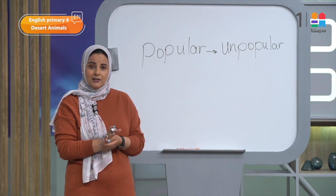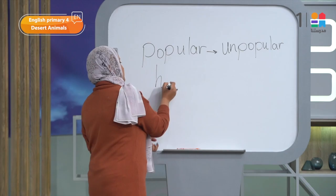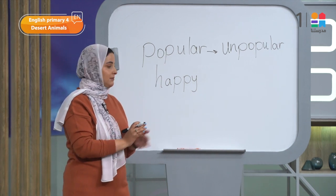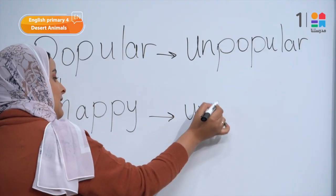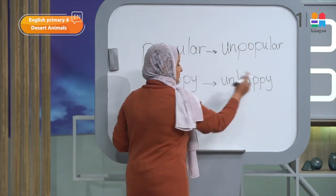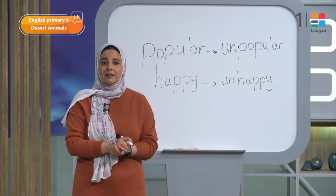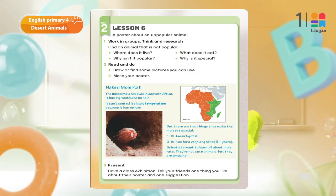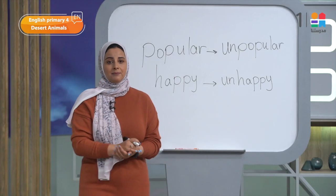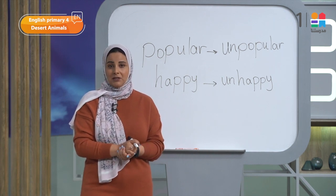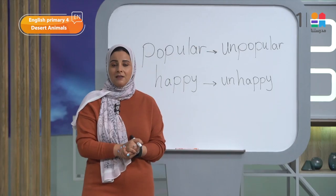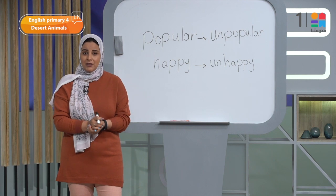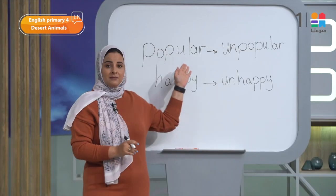Can you think of another word with 'un-'? For example, if I'm saying happy — حد سعيد مبسوط — what is the antonym or the opposite of happy? Unhappy. Can you name some popular animals? Why are they popular? Monkeys, for example, because they are funny. Gazelles, because they are beautiful. Dolphins, because they are friendly. So again, what's the opposite of popular? Unpopular.